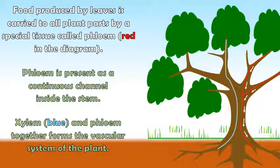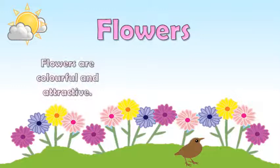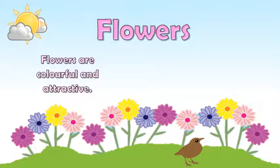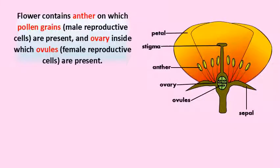Flowers are colorful and attractive. They are the reproductive part of a plant. A flower contains anthers on which pollen grains are present, and an ovary inside which ovules are present.